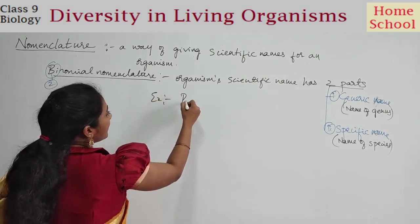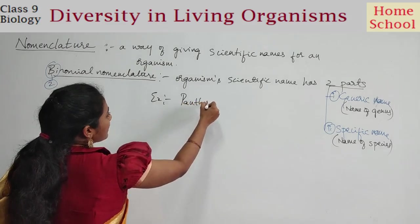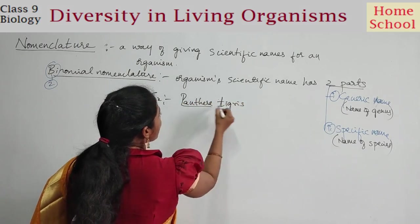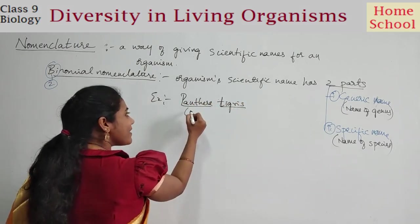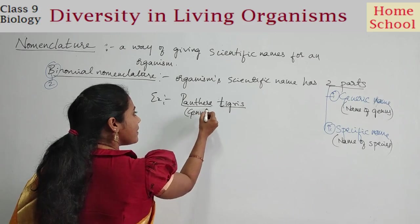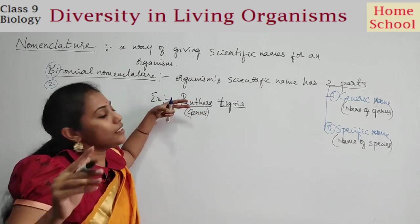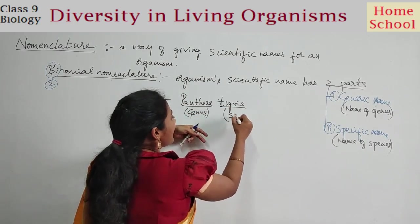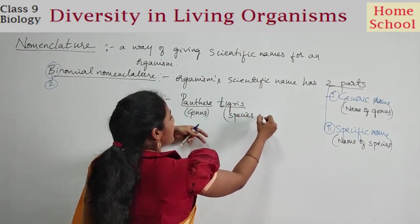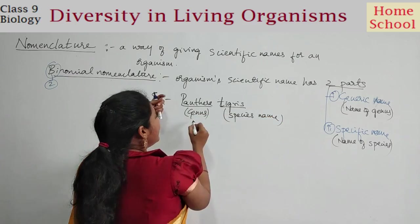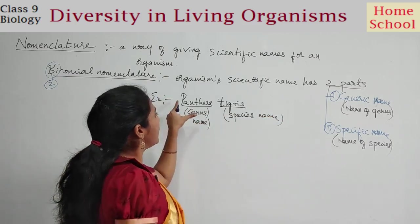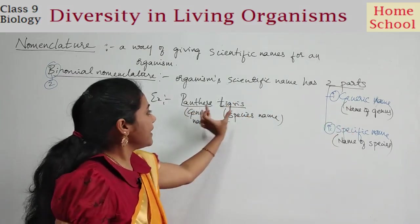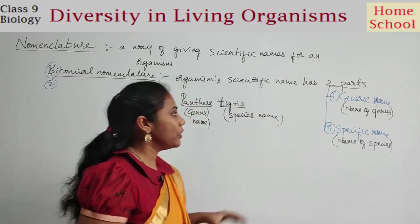For example, tiger is called Panthera tigris. Panthera is the genus — it indicates to which genus the organism belongs. Tigris is the species name. So Panthera is the genus name, which is the first part called the generic name, and tigris is the second part called the specific name.